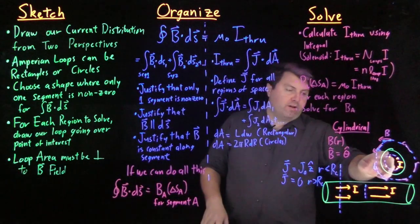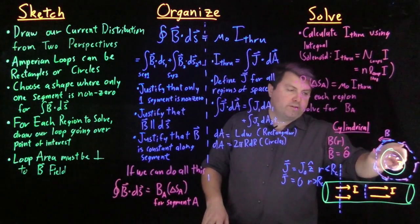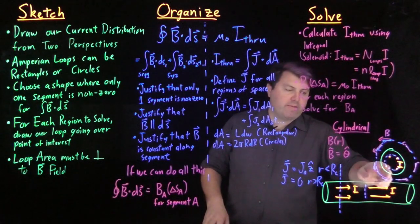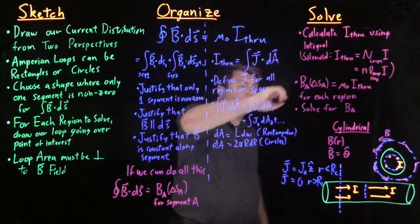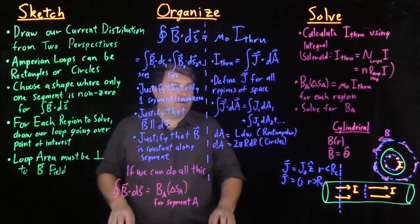In this case, we would need to solve the current once, then twice, and so we need to find the magnetic field once, then twice. So this is how we use sketch, organize, solve to find the magnetic field using Ampere's law.